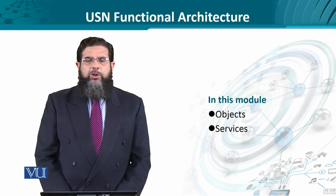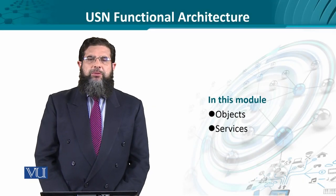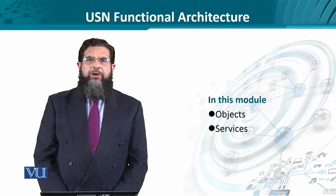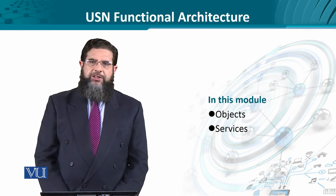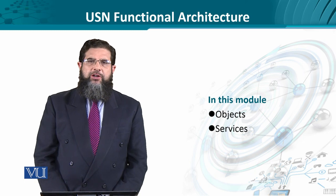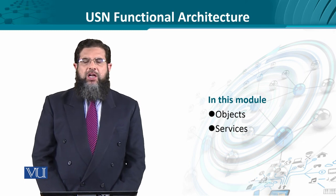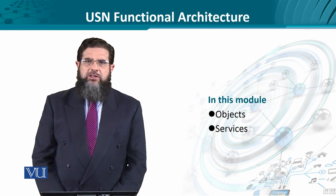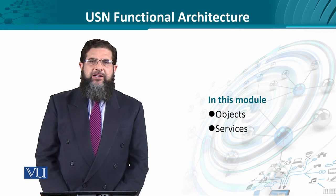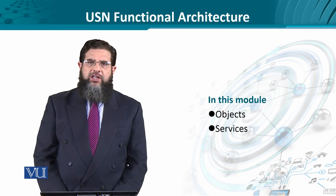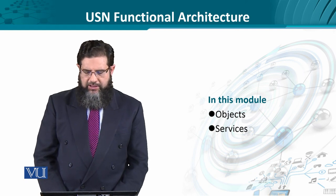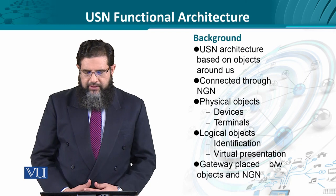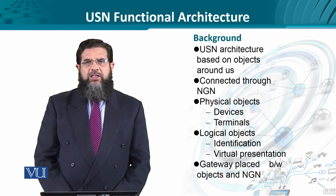The ubiquitous sensor network services have to be provisioned to end-users through an architecture, so the functional requirements from that architecture are going to be based on certain entities. These entities are referred to as objects, which are involved in providing or obtaining certain services. We will start with the understanding of objects.